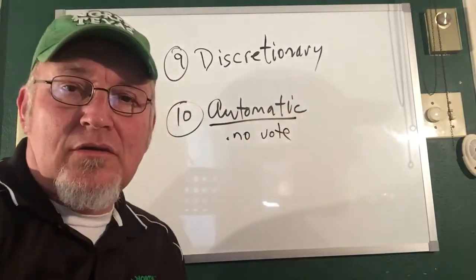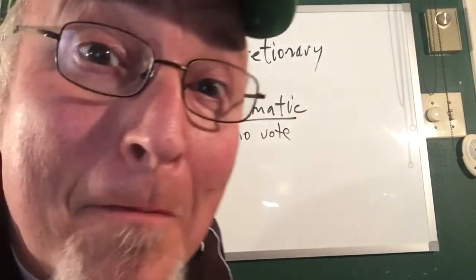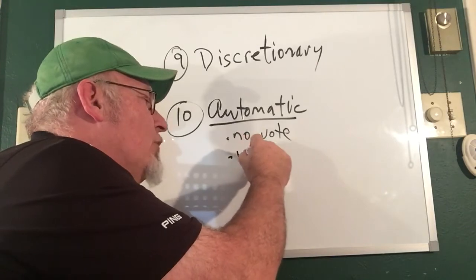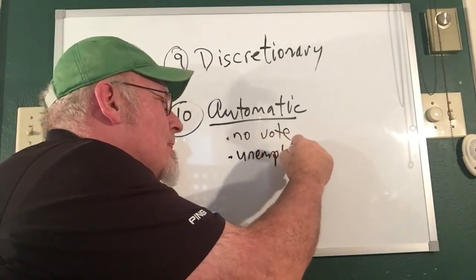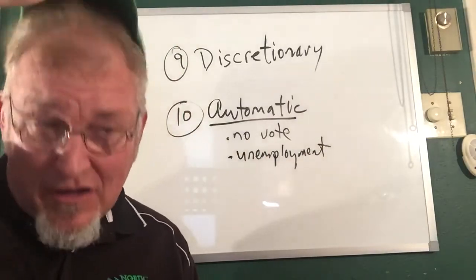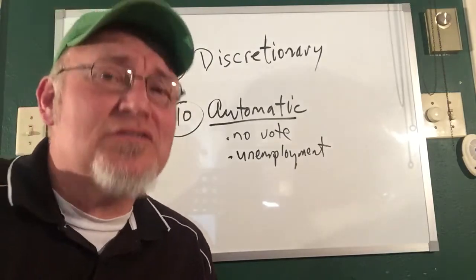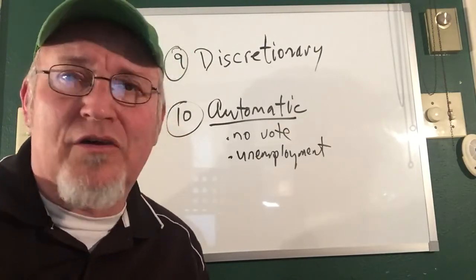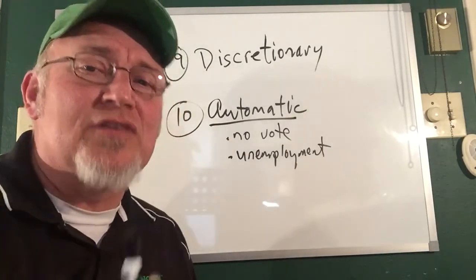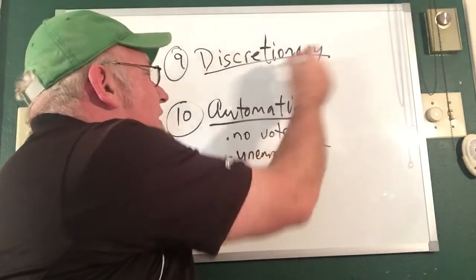The best example I can give you is unemployment. So unemployment payments, that's sort of a timely example right, because we just had this past month millions of people apply for unemployment. Well Congress isn't going to have to vote on them receiving that unemployment. It's an automatic expenditure versus discretionary.